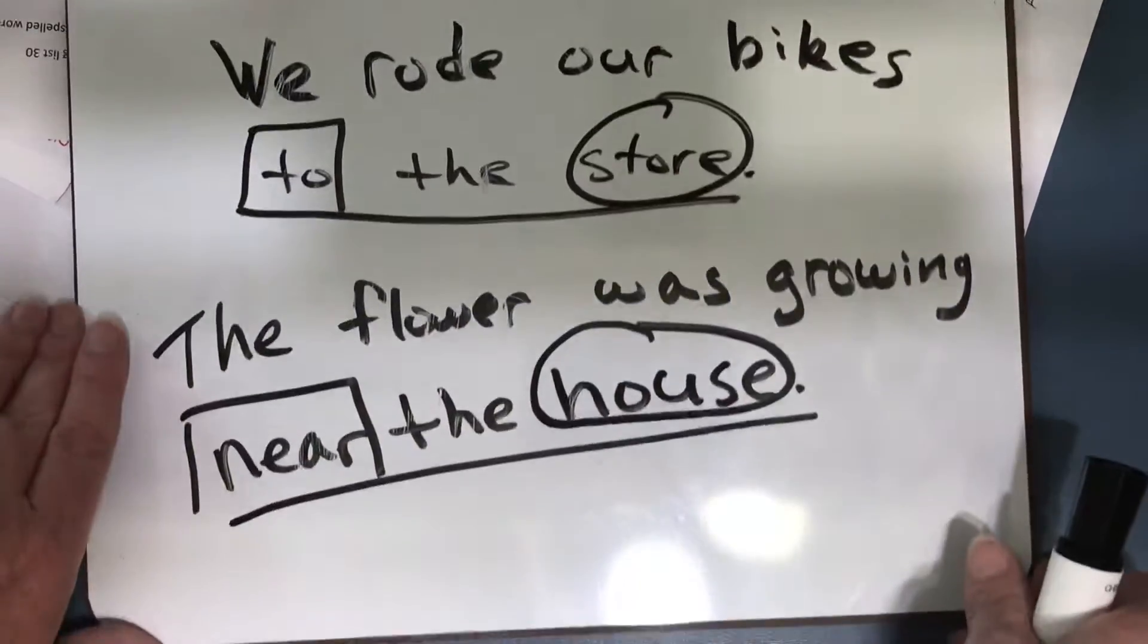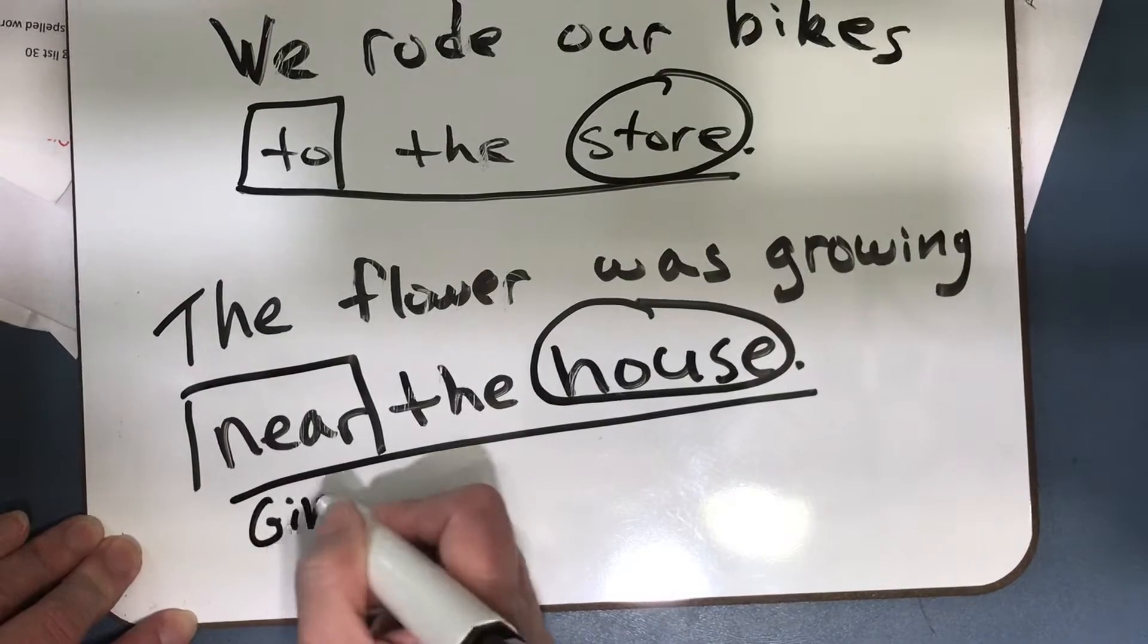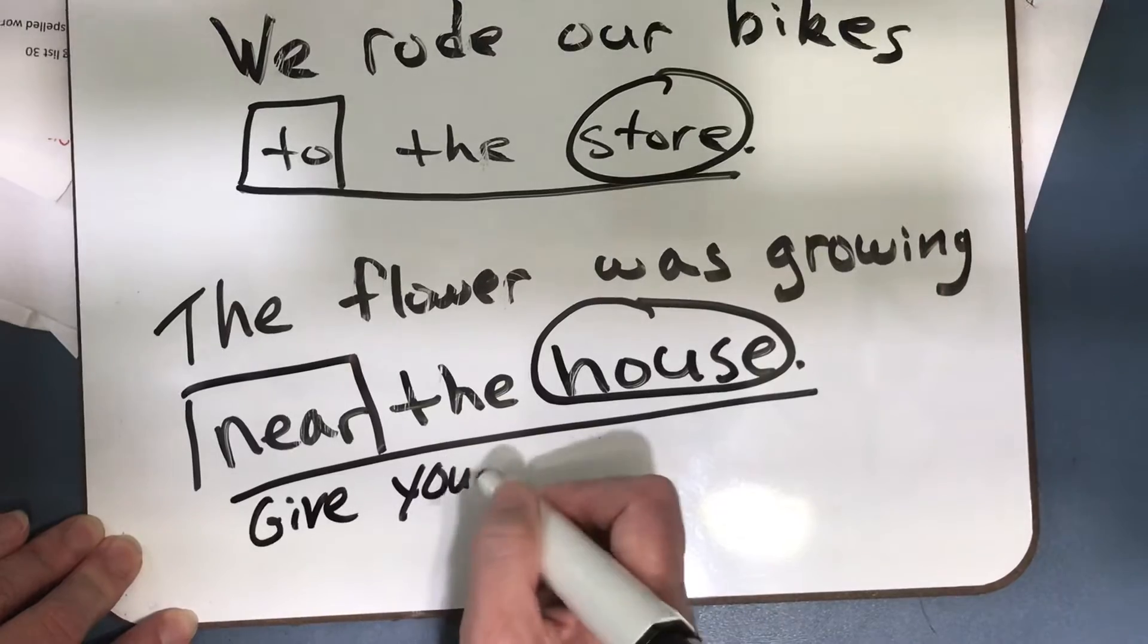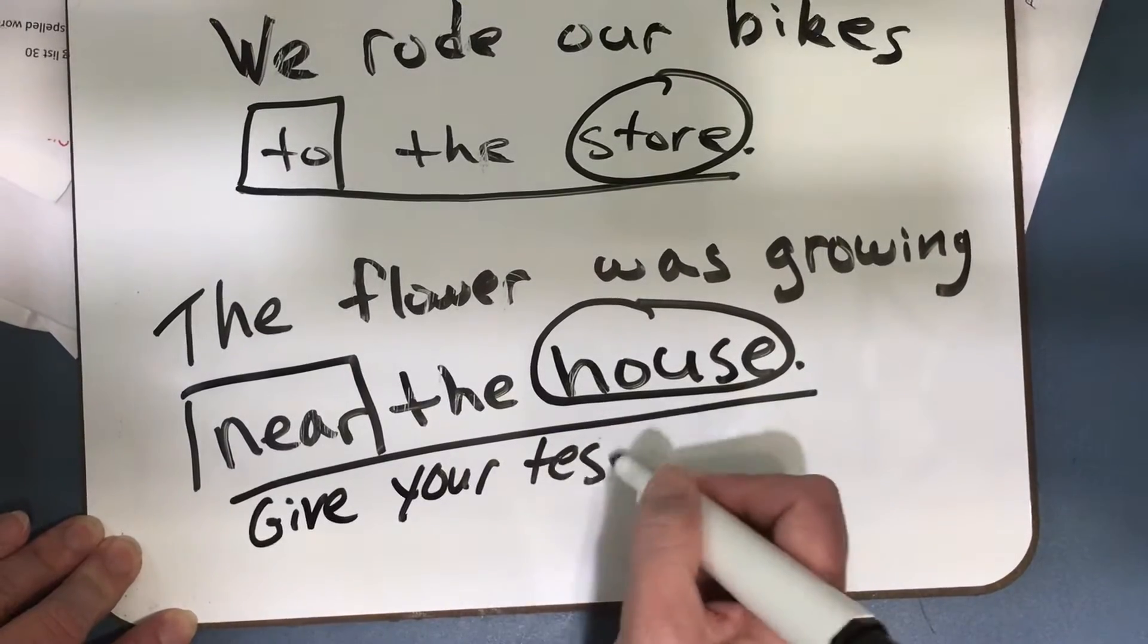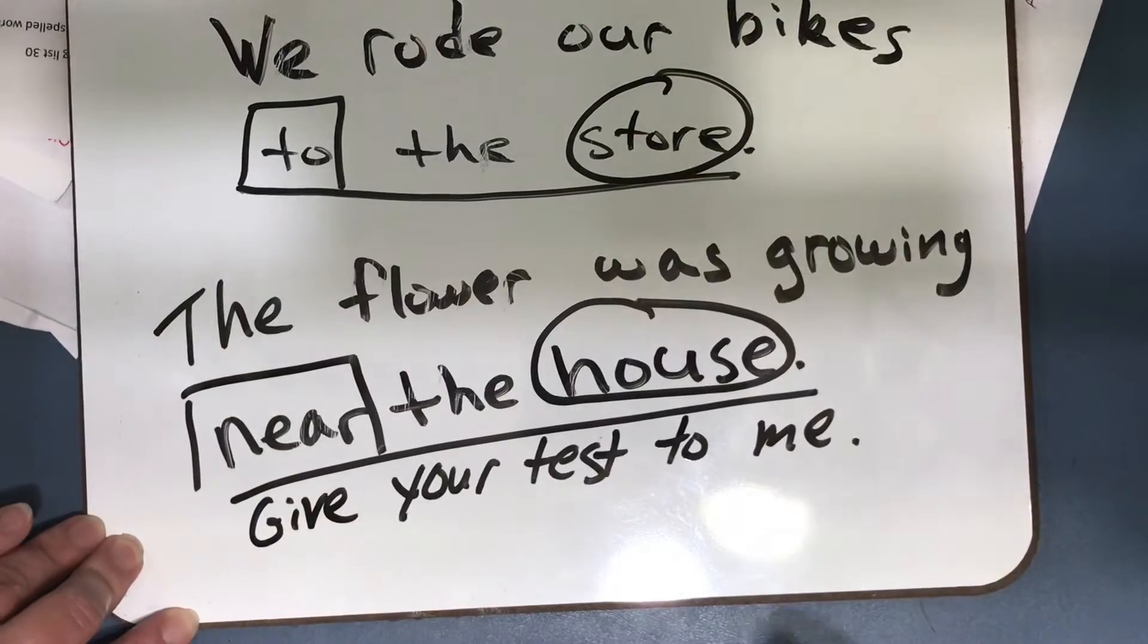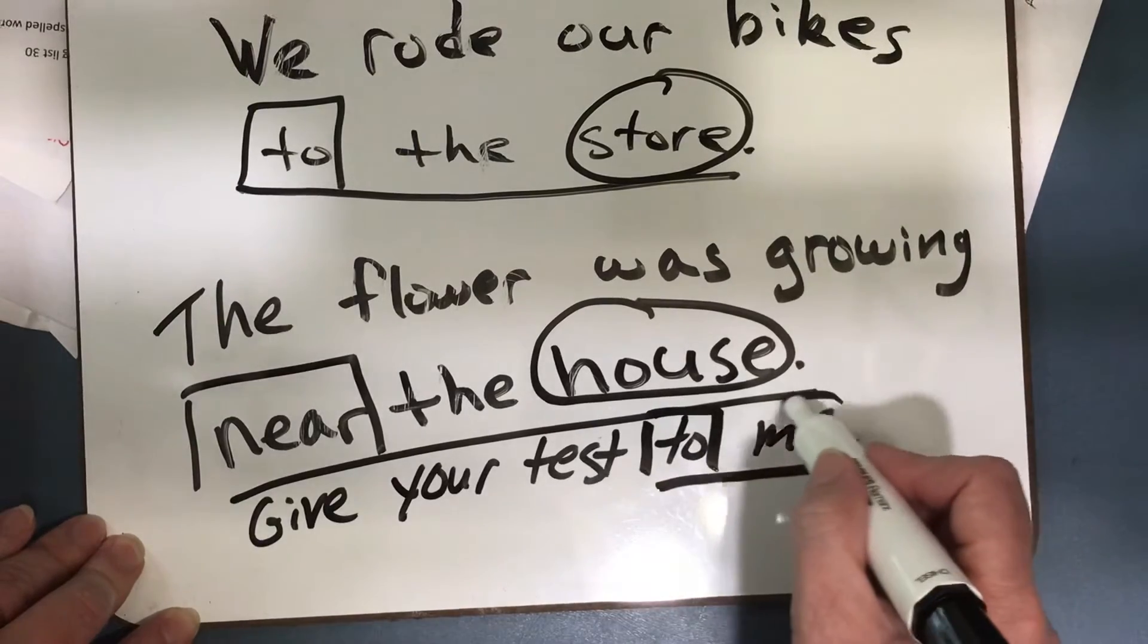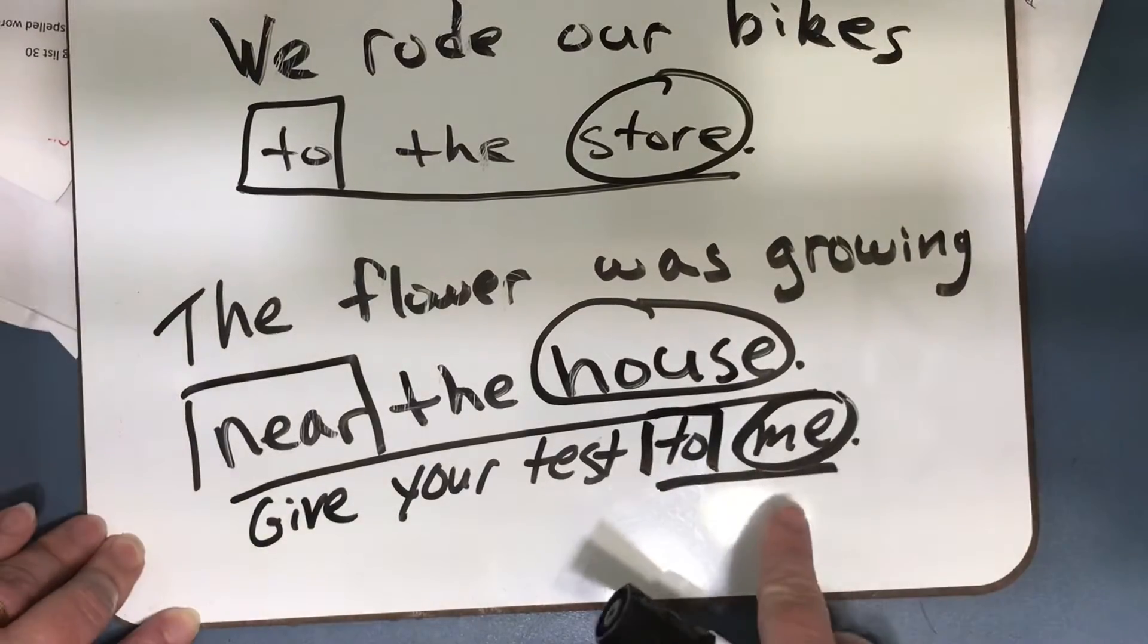Let me give you an example of one where it's a pronoun. Let's see. Give your test to me. To me is your prepositional phrase. To is your preposition. Me is the object of the preposition, and it's a pronoun.